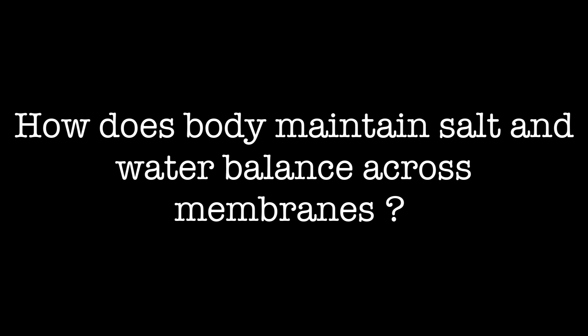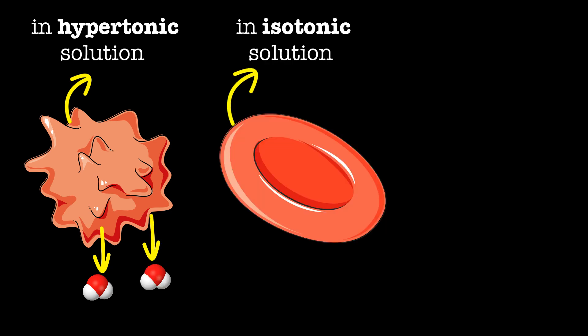How does the body maintain salt and water balance across membranes? When a red blood cell is placed in a hypertonic solution, water will leave the cell and the cell will shrink. In an isotonic environment, the relative concentration of solute and water are equal on both sides of the membrane. There is no net water movement, so there is no change in the size of the cell.